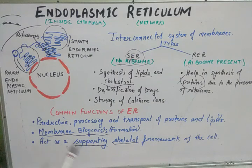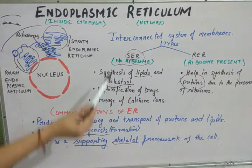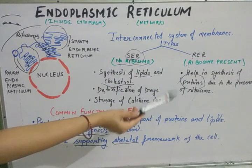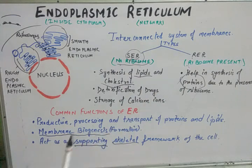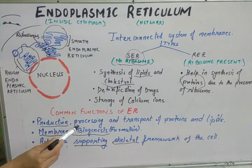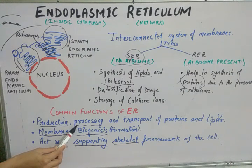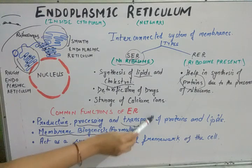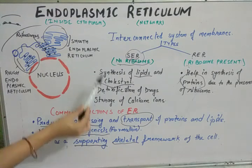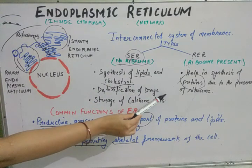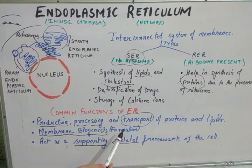Wherever proteins are required in the cell, rough endoplasmic reticulum is present. After producing proteins, the endoplasmic reticulum also processes them — making any structural changes or modifications needed — and then transports them to the required site within the cell. Similarly, lipids and other molecules formed by smooth and rough ER are processed and transported within the cell by the endoplasmic reticulum.